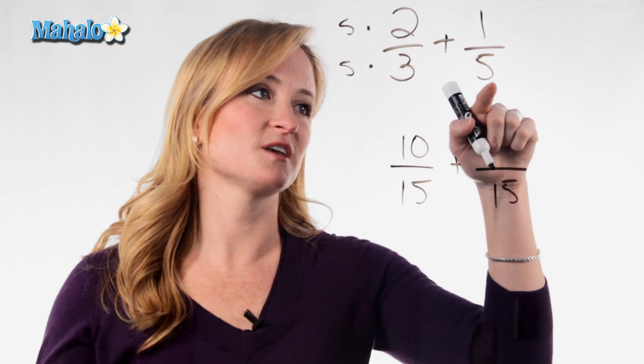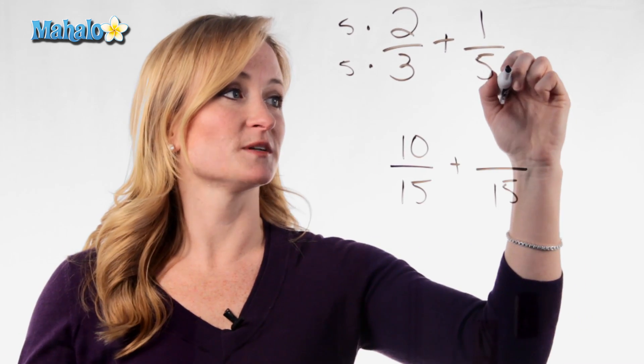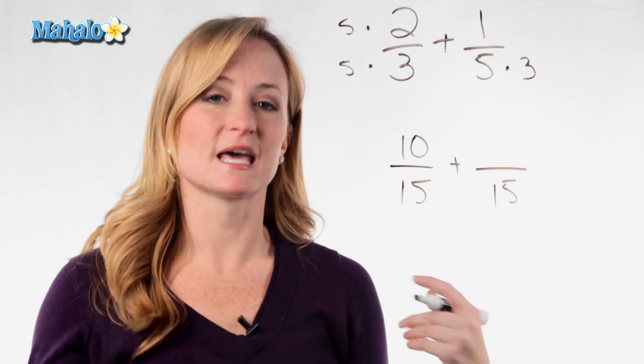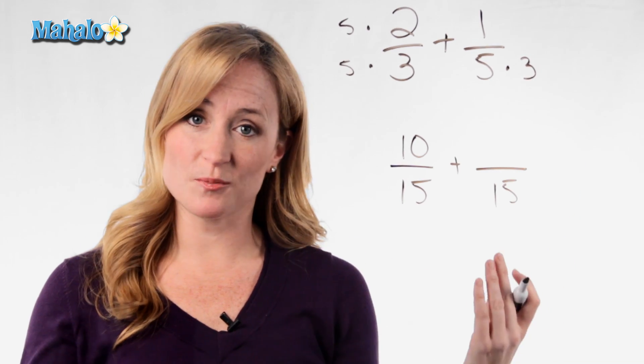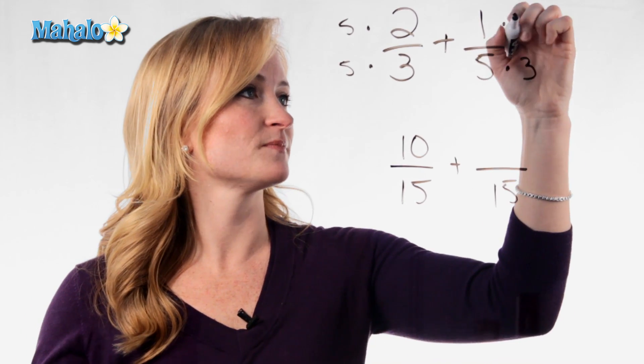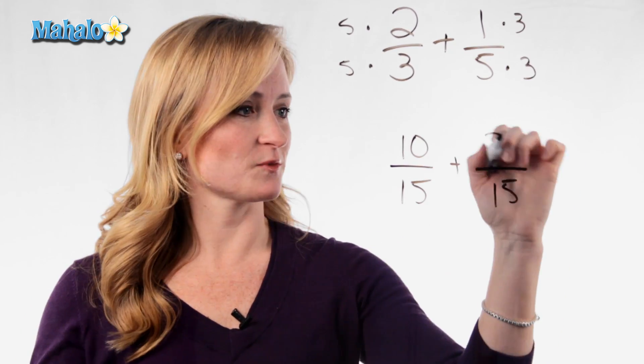Let's do the other side. How did this 5 become a 15? We multiplied it by 3. And again, what you do to the bottom, you must do to the top. 1 times 3 is 3.